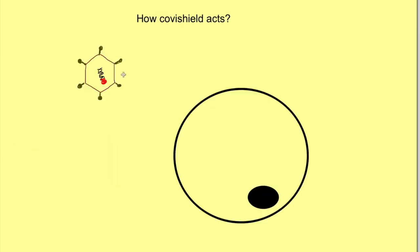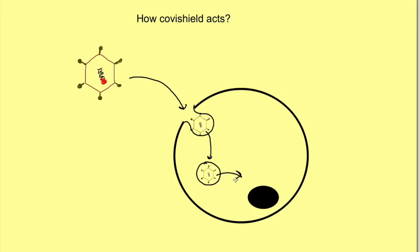Once this adenovirus is inserted in the form of the vaccine into the body, it goes and attaches to the cells, and the cells take up this virus inside. It moves into the cell, then moves out from the cytoplasm, and inserts its genome into the nucleus of our cells.